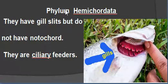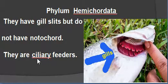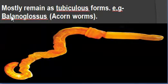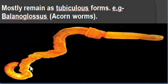The hemichordate animals have both chordate and non-chordate characters. They are ciliary feeders — they capture prey and feed with the help of cilia. Most of these animals remain as tubicolous forms, living inside tubes. Balanoglossus is an example of a hemichordate.